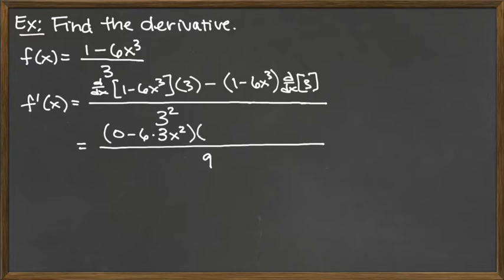Next to that we have it multiplied by the 3, and then we've got to subtract the 1 minus 6X cubed times the derivative of the constant 3. Well, the derivative of the constant 3 is 0. So everything that comes after that middle subtraction sign is just going to go away.